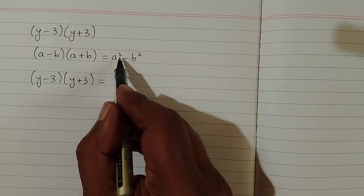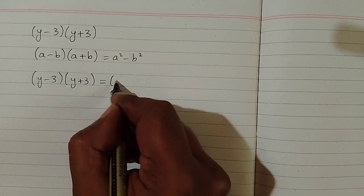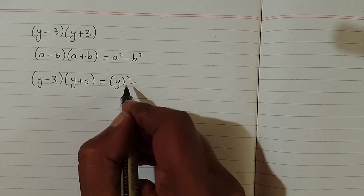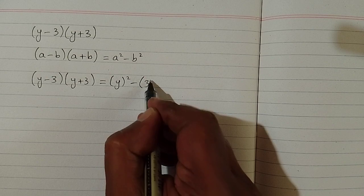Then we have a², so we can put y in place of a. So we have the square of y, then minus sign, and in place of b we can put 3. So we have the square of 3.